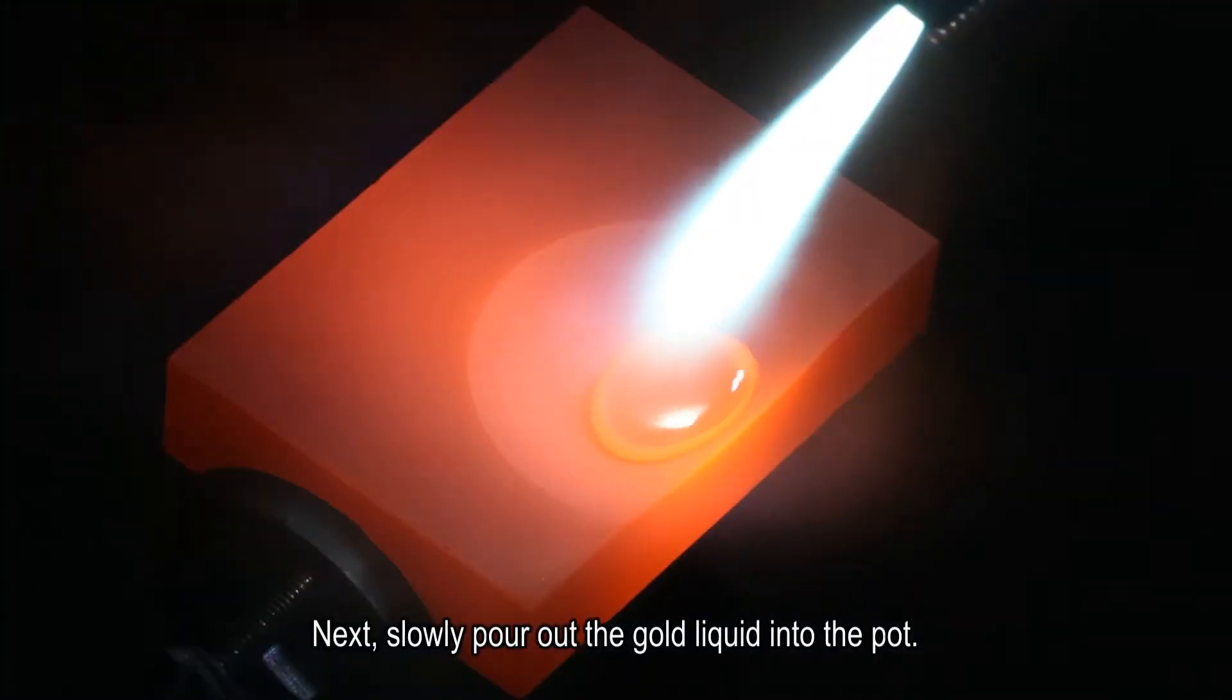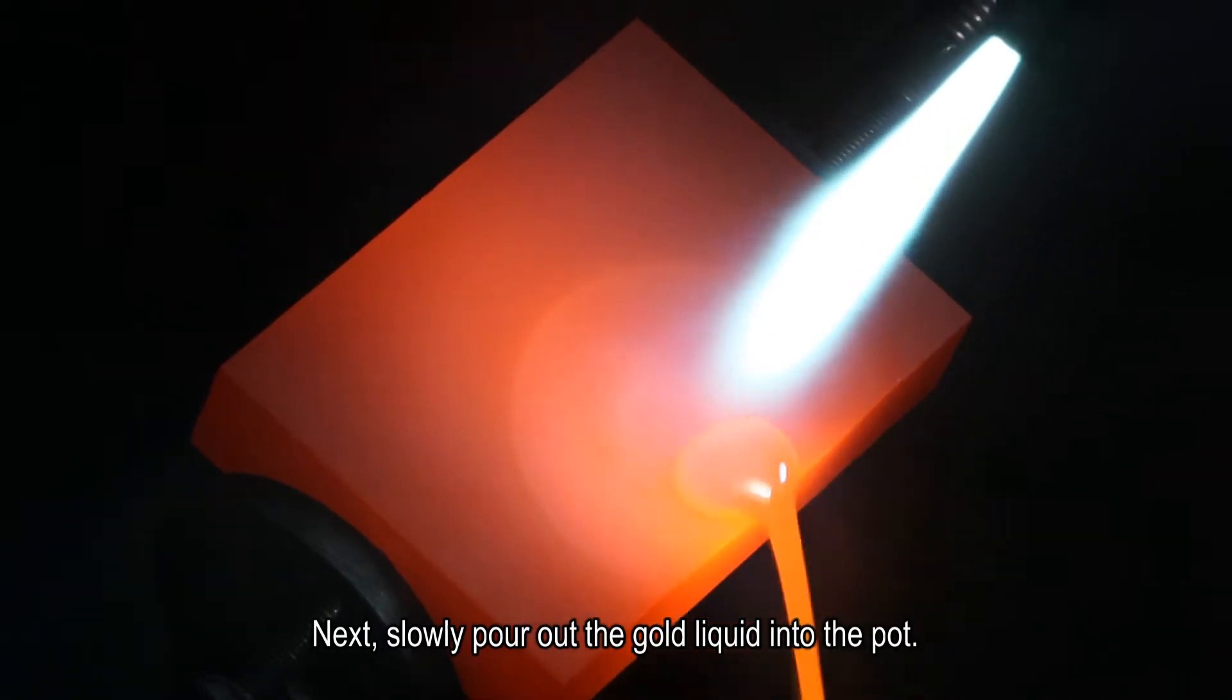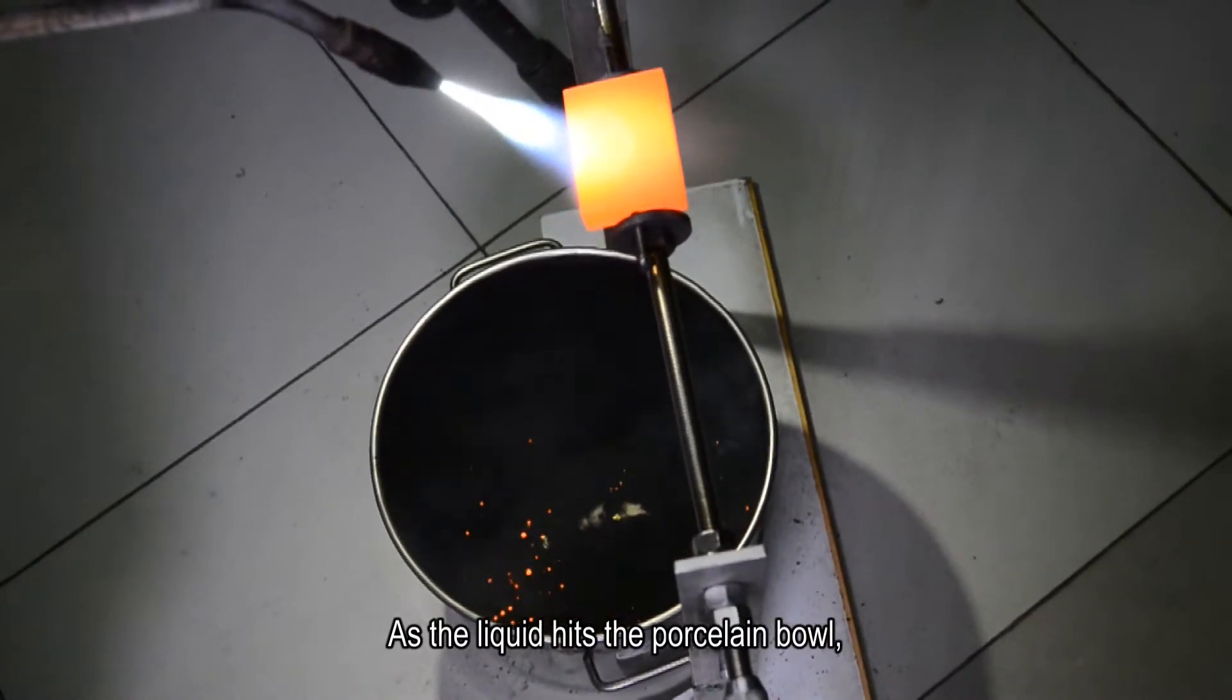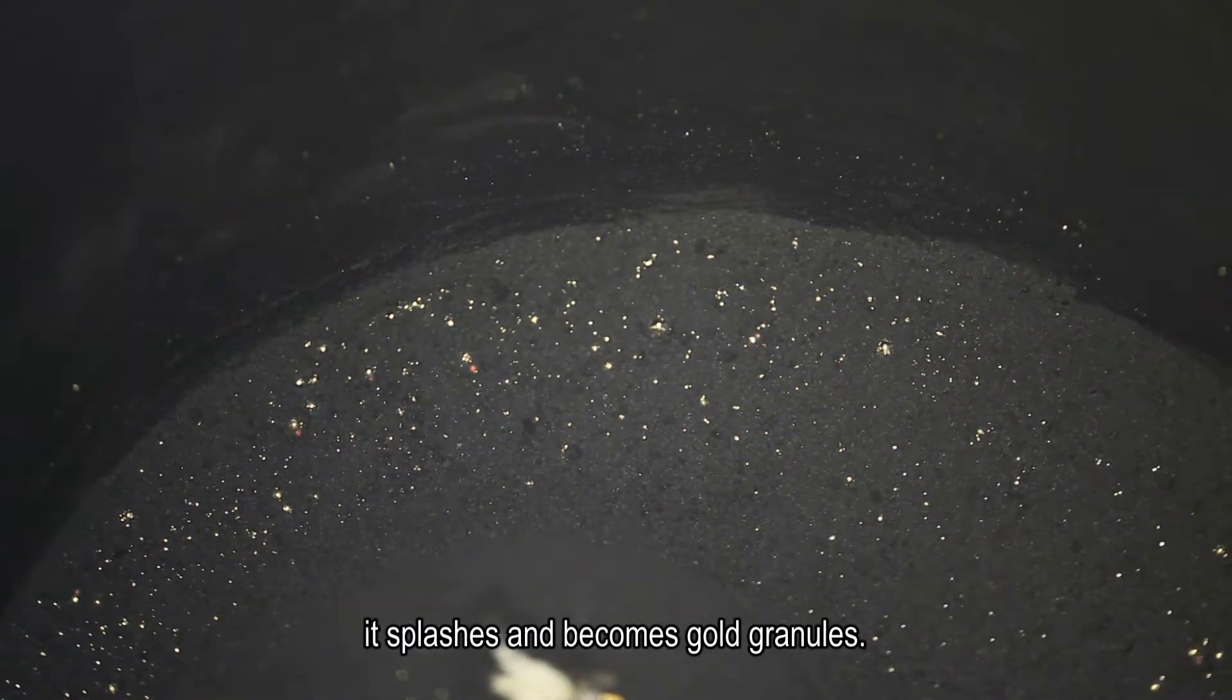Next, slowly pour out the gold liquid into the pot. As the liquid hits the porcelain bowl, it splashes and becomes gold granules.